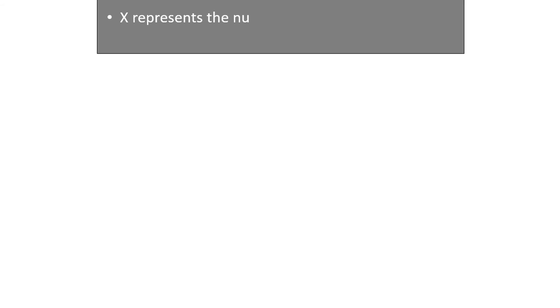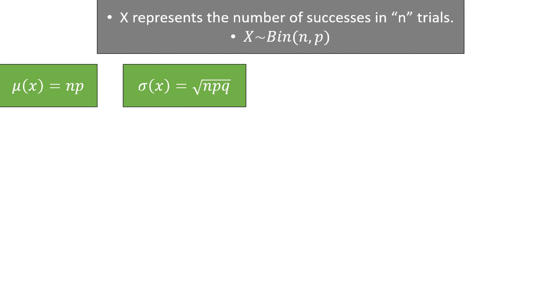Before I show you the formula for the confidence interval, I want to do a little bit of a proof so that you understand what the confidence interval is doing. Recall that if x is the number of successes in n trials, then x follows a binomial distribution. The mean of the binomial distribution you might remember as n times p, and the standard deviation is the square root of n times p times q. q is just the probability of failure, and is the complement of p, so it's 1 minus p.